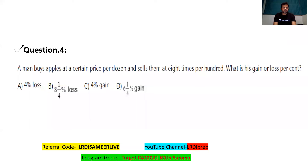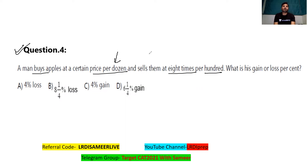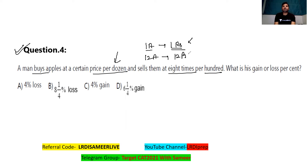Question number four: a man buys apples at a certain price per dozen and sells them at eight times per hundred. If one apple is purchased at one rupee, then 12 apples are purchased at 12 rupees — so the per dozen price is rupees 12. He sells at eight times per hundred, meaning he sells 100 apples, and 100 apples were purchased at 100 rupees.